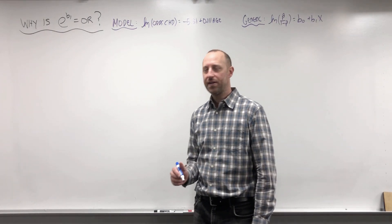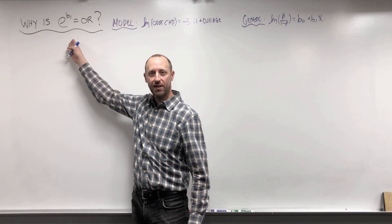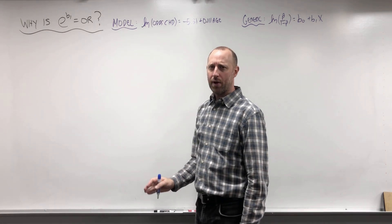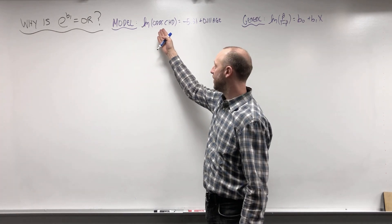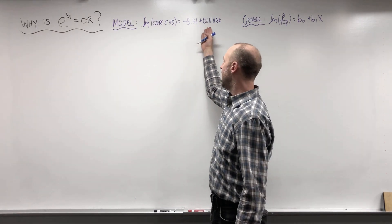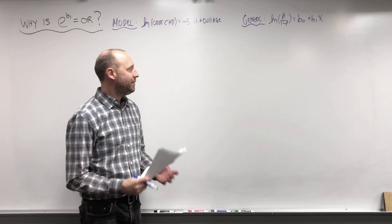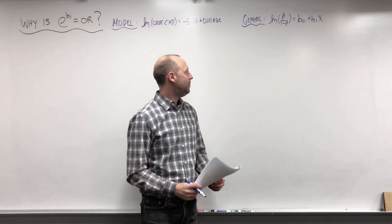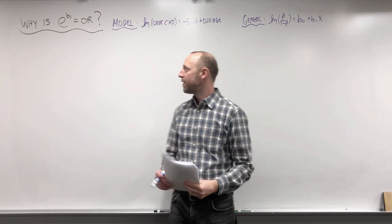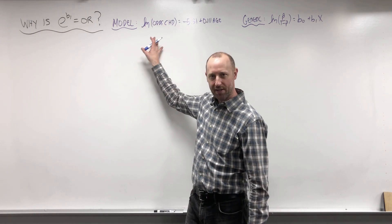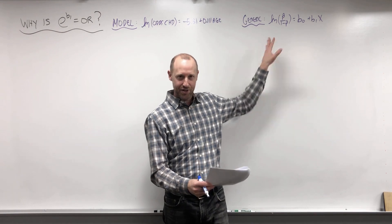In this video, we're going to take a bit of time to show you why exponentiating the coefficient gives us an odds ratio. What I'm going to do is first work through the example with our data, get the log odds of coronary heart disease and numeric values for the coefficients. Then I'm going to do the exact same explanation generically, just where we have B0 and B1, and generalize it to any logistic model.